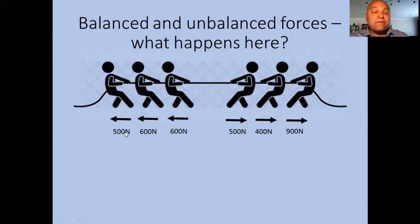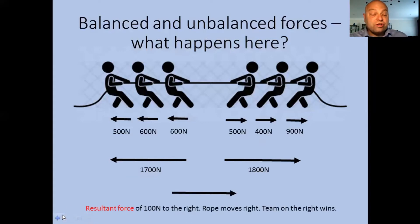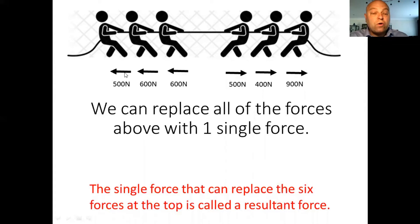Well, here's what you should have done. You should have added together the 500, the 600, and the 600, which gives you a total resultant force of 1700 Newtons. You should have added these three here together, the 5, the 4, and the 9, giving you a resultant force of 1800 Newtons. And the resultant force of the whole lot really, 1800 take away 1700, is 100 Newtons. So the answer here is a resultant force of 100 Newtons to the right. The rope moves right. The team on the right wins. So to summarize, we can replace all of the forces above, all of these six forces, with one single force called the resultant force. In this case, there was 100 Newtons to the right. So 100 Newtons to the right is one force that replaces all of those forces, the effect of all of those forces added together.